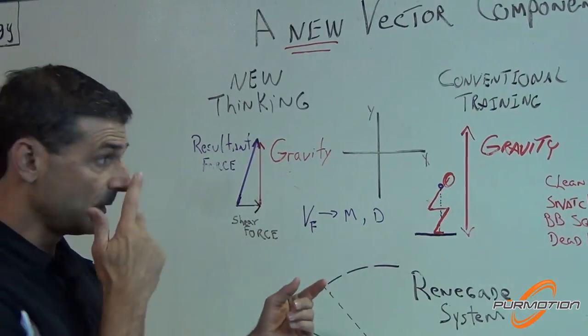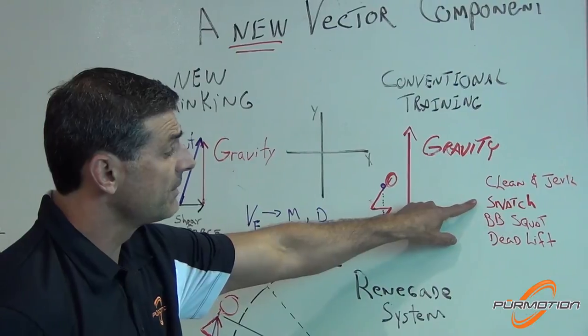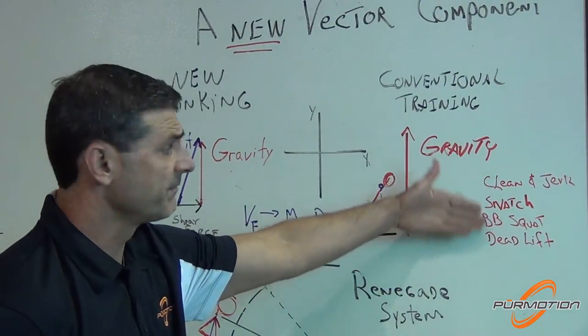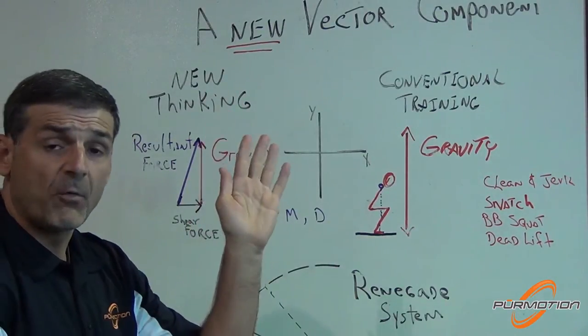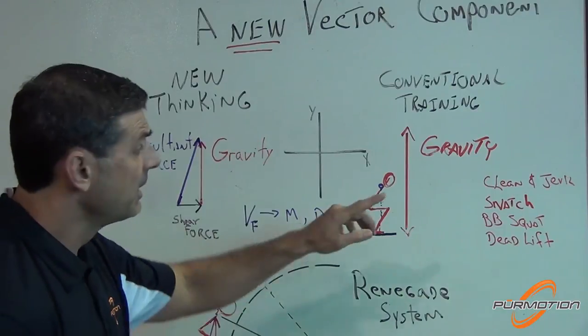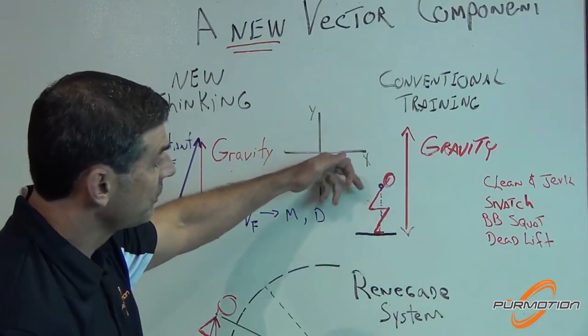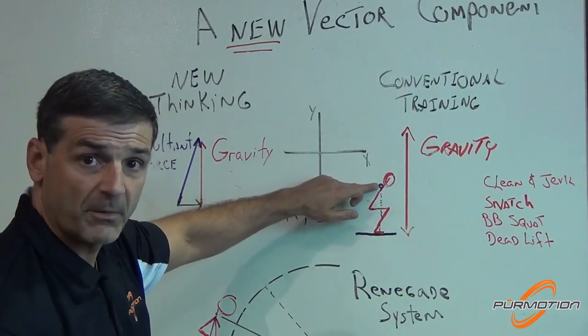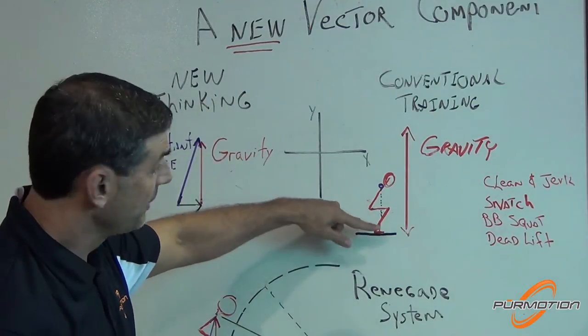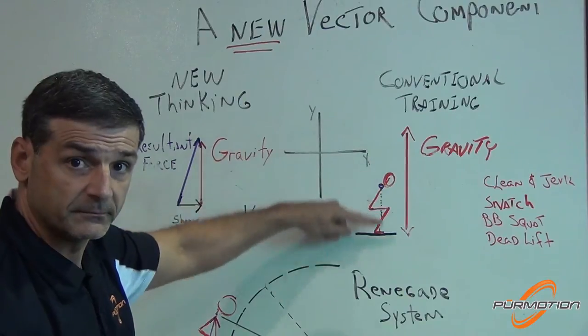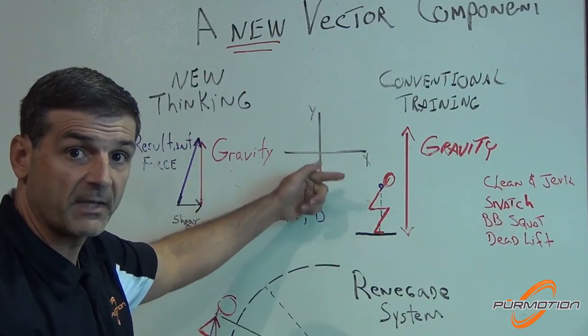So going back here to the whiteboard, most of the traditional lifts like jerk, snatch, barbell squat, and deadlift, and any of their variation pretty much happen in one plane, or the force generation is generated in what we call the Y axis, which is gravity. Regardless if you're doing a squat where you start with the bar behind your neck or above the floor or on the floor, you're going to be moving that bar up and down.